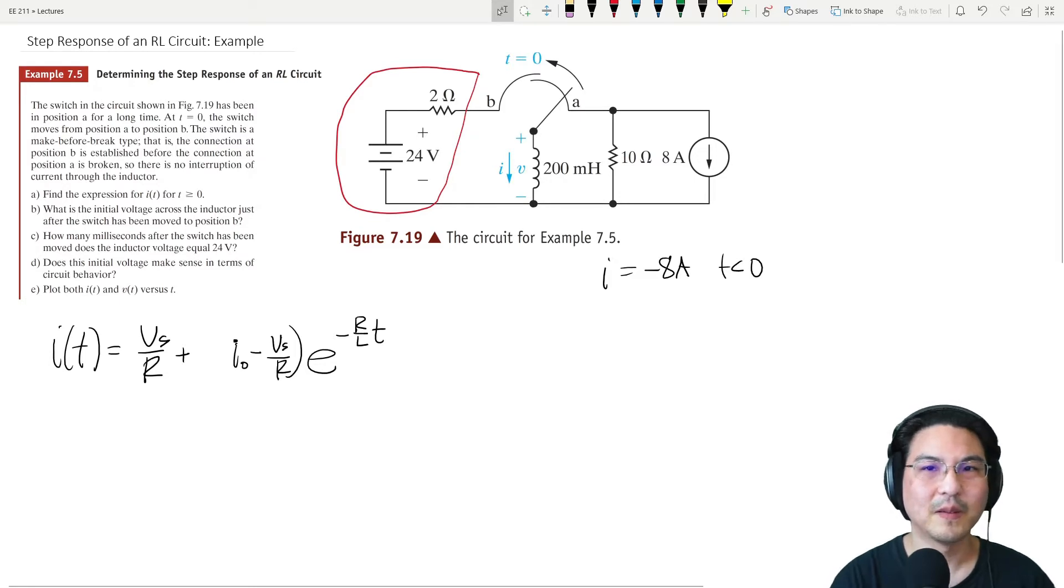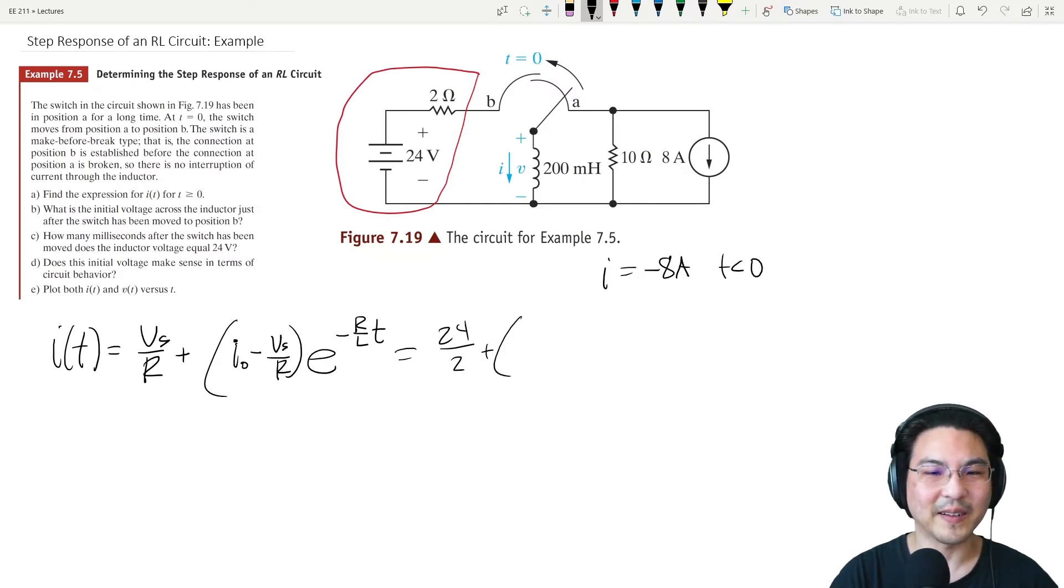For the current we just plug in the numbers. We got this already, that's 24. I'll just plug the numbers: 24 over R is 2, plus I₀ negative 8, plus Vs over R, 24 over 2, e to the minus R over L, 200 milli means 0.2. There we go.